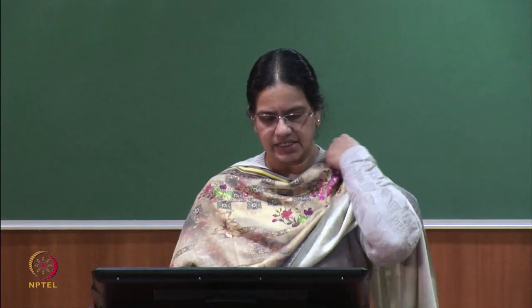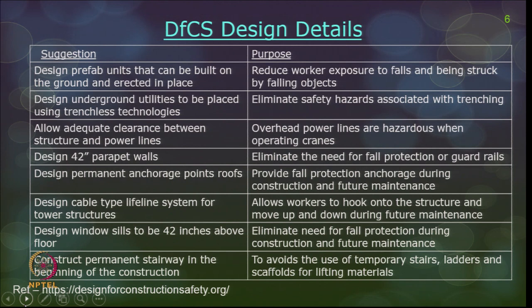Some examples: design a 42-inch parapet wall to eliminate the need for fall protection or guard rails; allow adequate clearance between structure and power lines, since overhead power lines are hazardous when operating cranes; design underground utilities to use trenchless technologies, eliminating safety hazards associated with trenching — you can go with a no-dig policy; design windowsills to be 42 inches above the floor to eliminate fall protection needs; and construct permanent stairways at the beginning of construction to eliminate fall hazards from ladders, temporary stairs, and scaffolds.